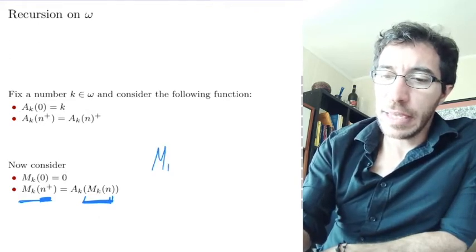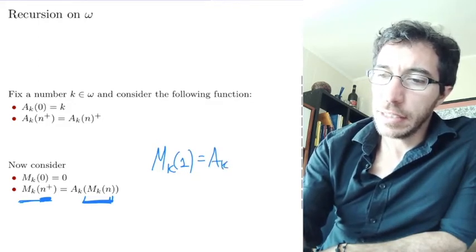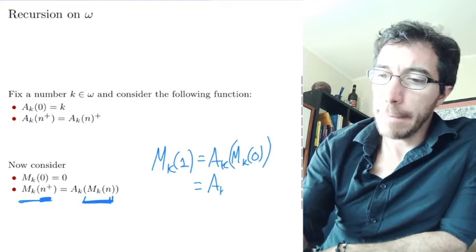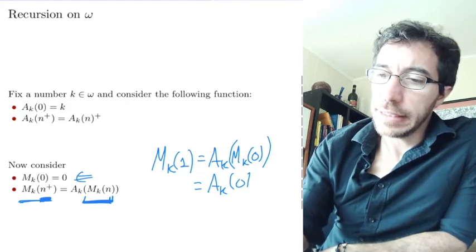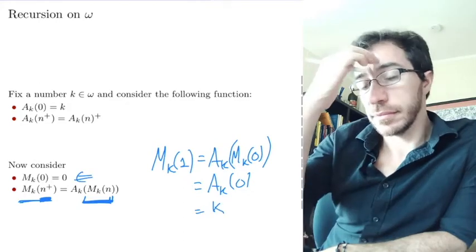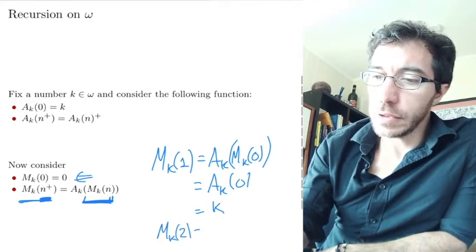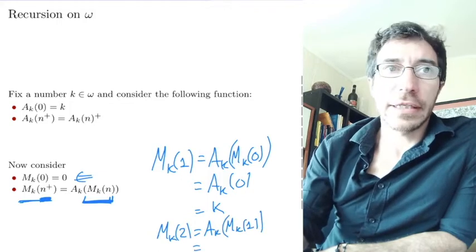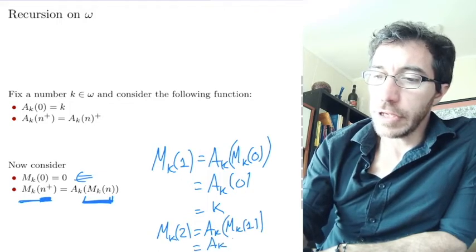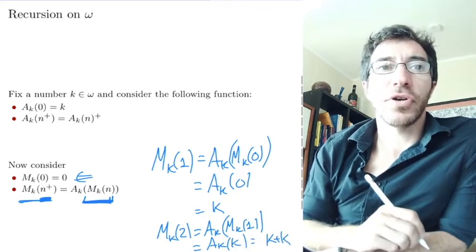So what do we get? m_k at 1 is going to be a_k of m_k at 0, which is a_k of 0, and then that is 0 plus k, that's k. m_k at 2 is going to be a_k at m_k of 1. That is a_k of k, which is equal to k plus k or k times 2.